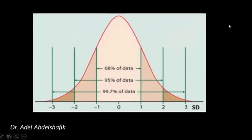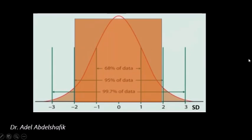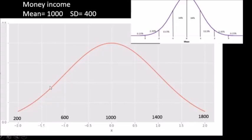If we go three standard deviations up or down, we include 99% of the data. Suppose we get a population and calculate their monthly income, and find that the mean is 1000 Egyptian pounds and the standard deviation is 400. We then have this curve.